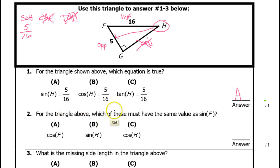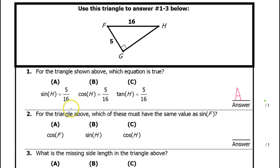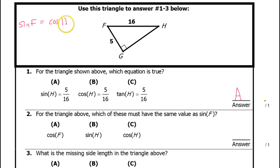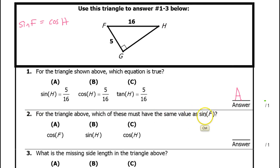For the triangle above, which of these must have the same value as the sine of F? Well, there's a theorem that says in a right triangle, if you're talking about the two acute angles, then the sine of one angle will equal the cosine of the other angle. So the sine of F should equal the cosine of H. The answer is going to be C.